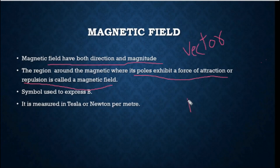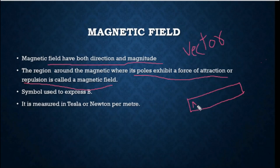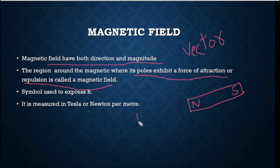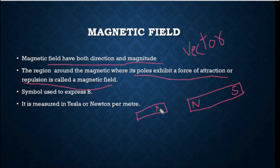If there is any other magnetic object, such as a bar magnet, the bar magnet has two sides — one side is north and the other side is south. In your childhood, you may have played with a magnet. One side is north and one side is south. These are called poles. If you bring another magnet close, you can observe attraction or repulsion.